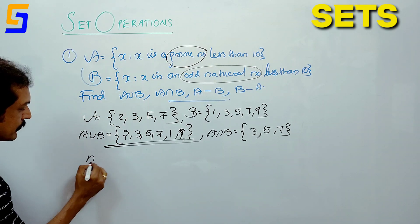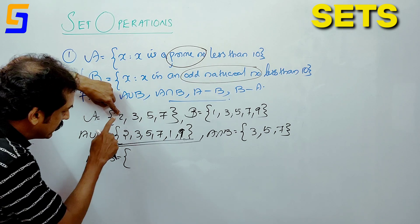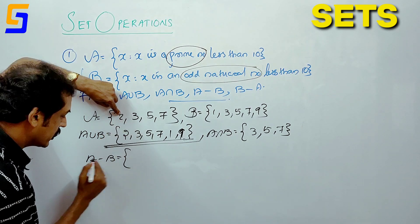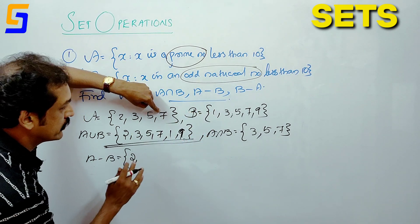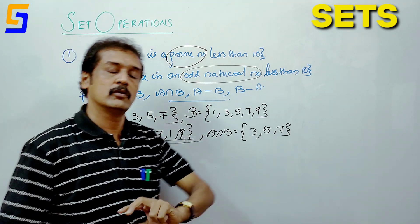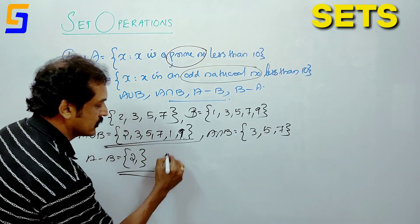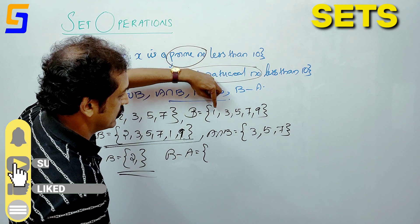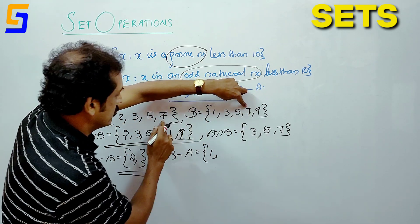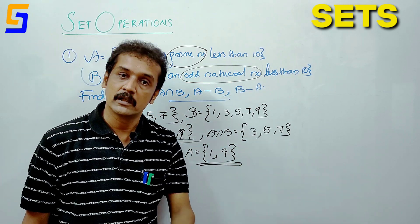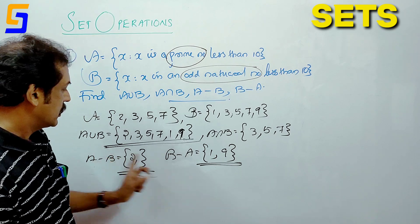Next is A minus B. A is {2, 3, 5, 7} and B is {1, 3, 5, 7, 9}. A minus B gives elements in A but not in B, which is {2}. Then B minus A: B is {1, 3, 5, 7, 9} and A is {2, 3, 5, 7}. B minus A gives elements in B not in A, which is {1, 9}.